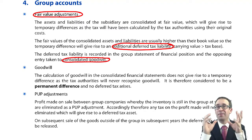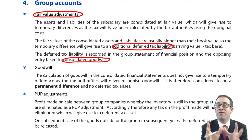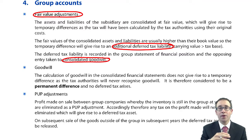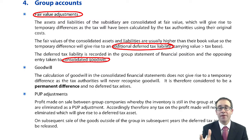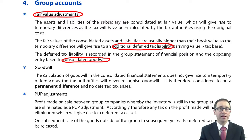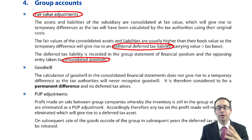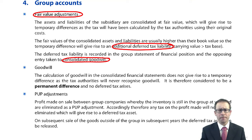We shouldn't play around with the legal tax expense — we should leave it as factually correct. What we do is when we adjust for the deferred tax liability, the other side of the entry is taken to your consolidated goodwill. So essentially you'd credit the deferred tax liability and debit goodwill, which increases the value of the goodwill.